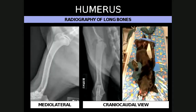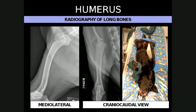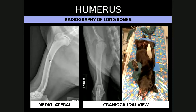For the humerus, the medial lateral view is very similar. The patient is again placed in lateral recumbency with the affected humerus closest to the cassette. The opposite unaffected limb is pulled cranially and the neck is dorsiflexed. One needs to collimate to include the joints proximally — so the shoulder joint — and distally — so the elbow joint — to the long bone. This is a very important concept for all long bones: include the joints proximal and distal to the bone.